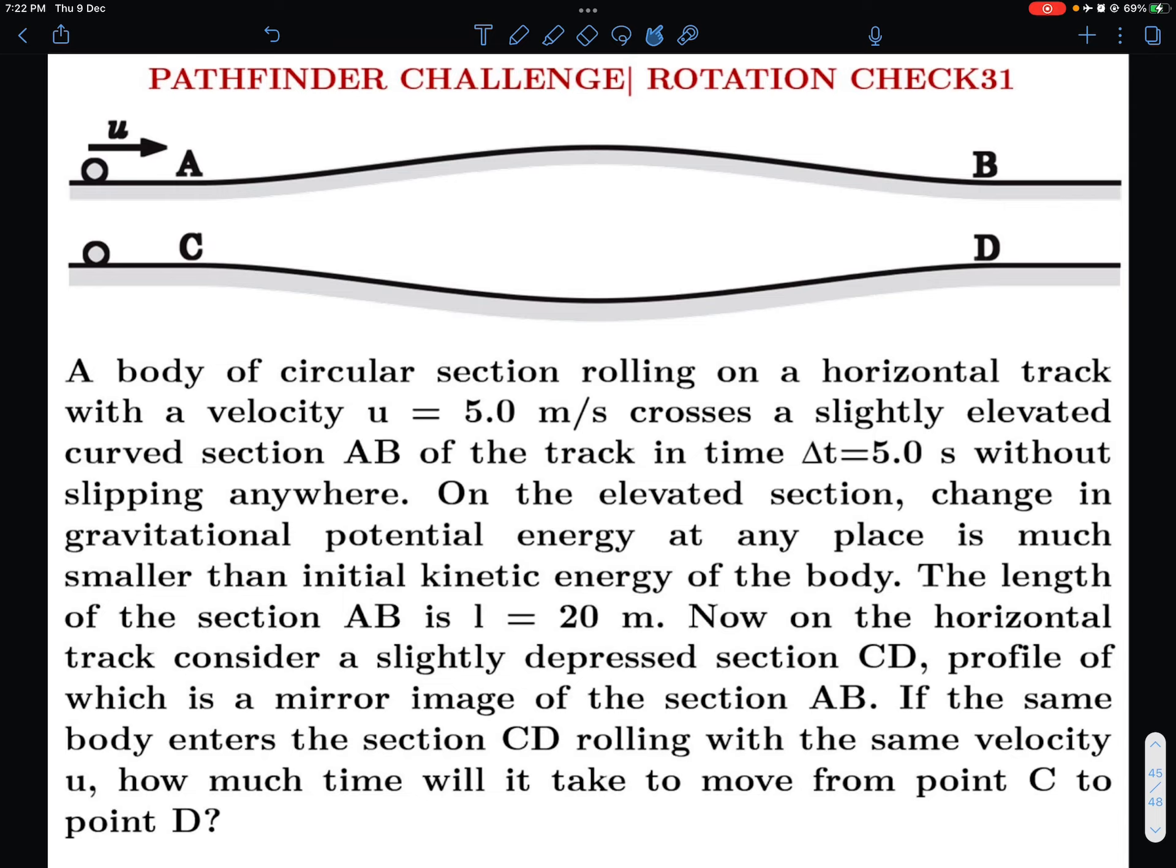This is problem number 31 from Check Your Understanding Rotational Mechanics. Let's read out this problem and then see how we can proceed with this. So let me formally read: a body of circular section rolling on a horizontal track with a velocity of 5 meter per second crosses a slightly elevated curved section AB of track in time Δt = 5 seconds without slipping anywhere.